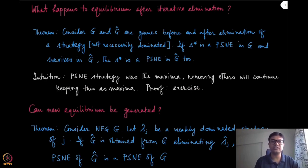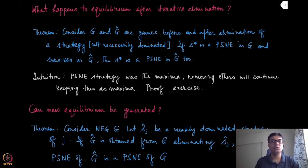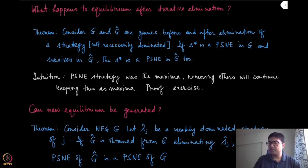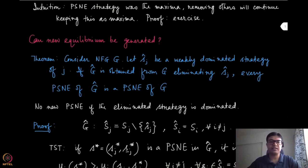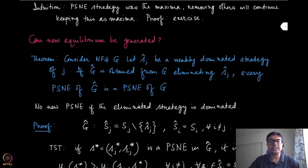This is the intuition; the proof is left as an exercise — it is very straightforward. But the more important question is: can you generate new equilibria? Can it be possible that if you remove some strategies — in particular dominated strategies — you actually generate a new set of pure strategy Nash equilibria? The next result essentially shows that if you remove a weakly dominated strategy, nothing is going to change: the PSNE of the reduced game is also a pure strategy Nash equilibrium of the original game.